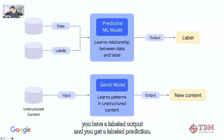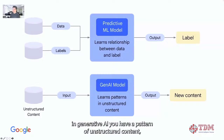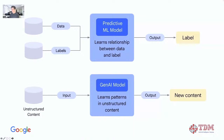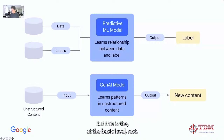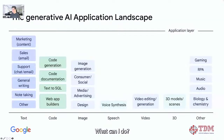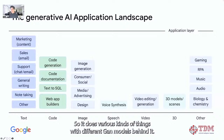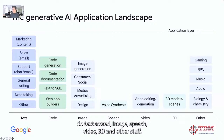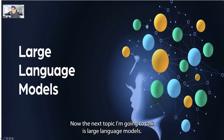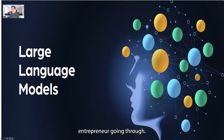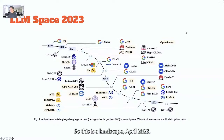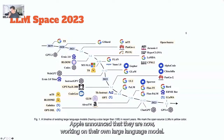In machine learning you have a labeled output and get a label prediction. In generative AI you have a pattern of unstructured content and the output is new content — for example in ChatGPT you prompt text content, it understands it, and gives a text output. There are many GAN models that do cross-domain tasks — text to image and others. This is the landscape of generative AI: text, code, image, speech, video, 3D. The next topic is large language models — what are these and why they're important, how they're built, and what we should understand from a management, leadership, or entrepreneur point of view.